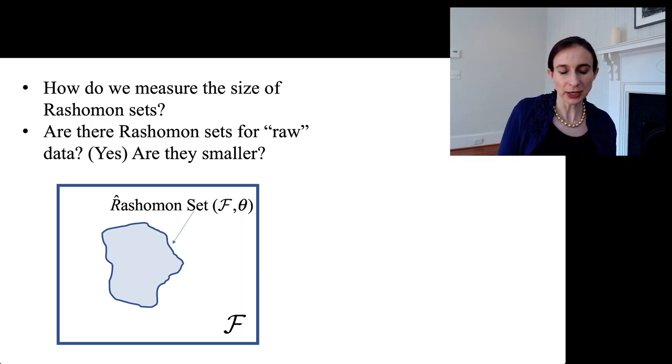And then the question is, well, for neural networks, are those Rashomon sets simply much smaller than the Rashomon sets for tabular data? And until we actually get a way of measuring the size of these Rashomon sets, it's going to be hard to get the answer to that question.